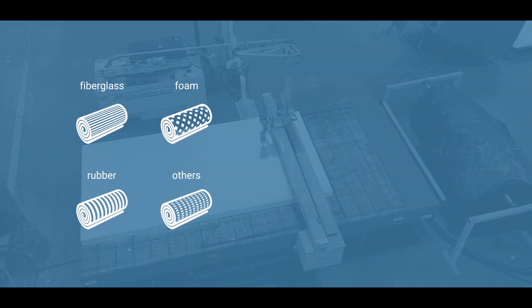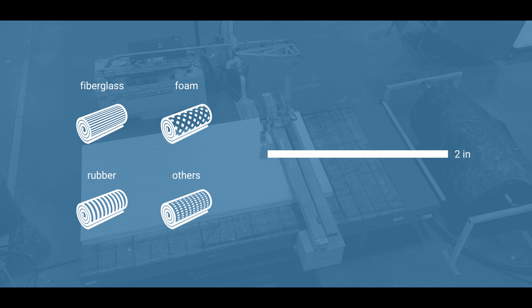The machine will cut fiberglass or foam insulation, as well as gasket, rubber, and many other types of insulation products, up to 4-inch thickness at a maximum positioning speed of 2,000 inches per minute.